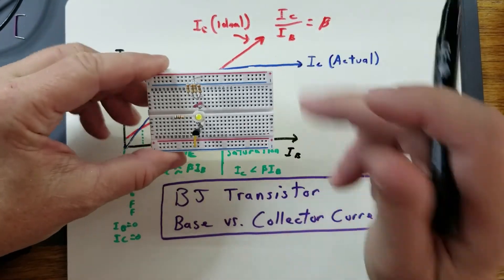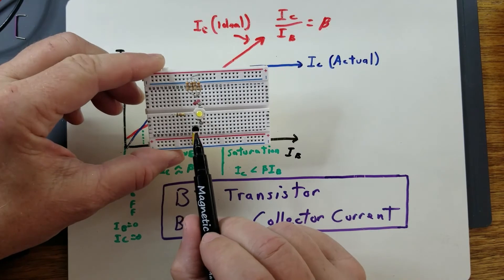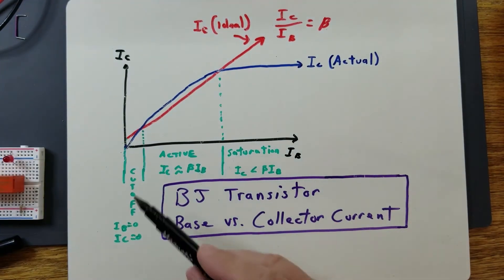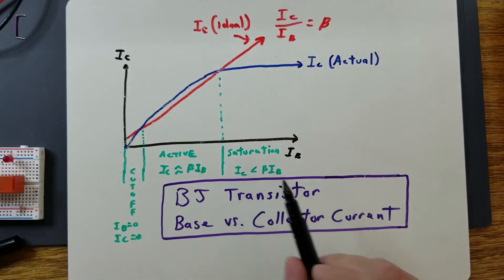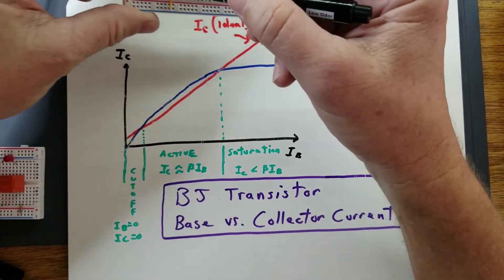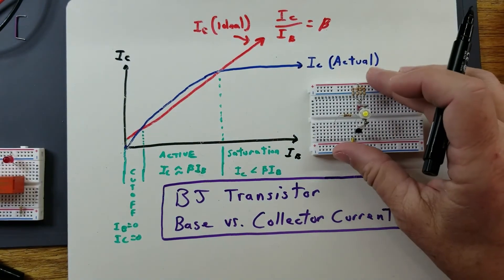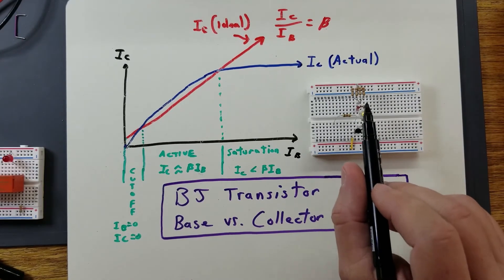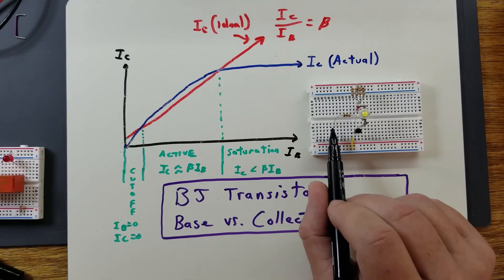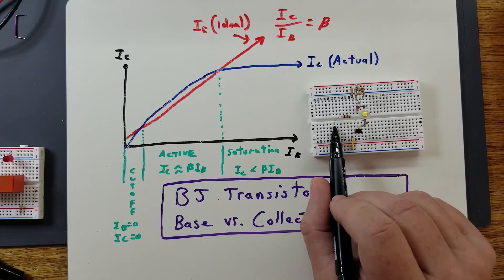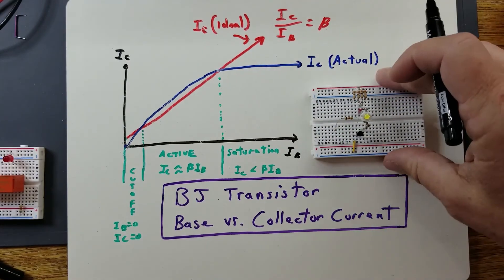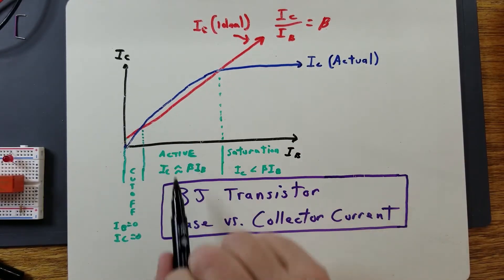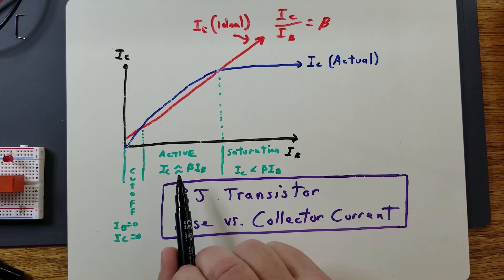One example of a transistor switch configuration is a high-powered LED circuit using an NPN transistor as a switch, operating in either cutoff or saturation mode. When in cutoff, the LED is off; when in saturation, the LED is on. The base resistor is calculated to put the transistor into saturation and turn the high-powered LED on using a very small current from a microcontroller at a 5-volt signal level.